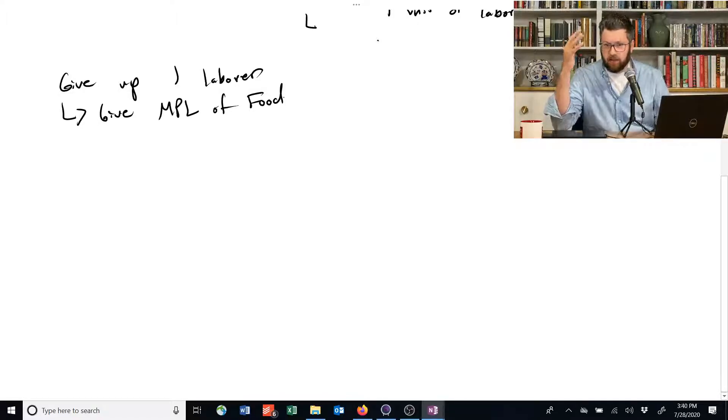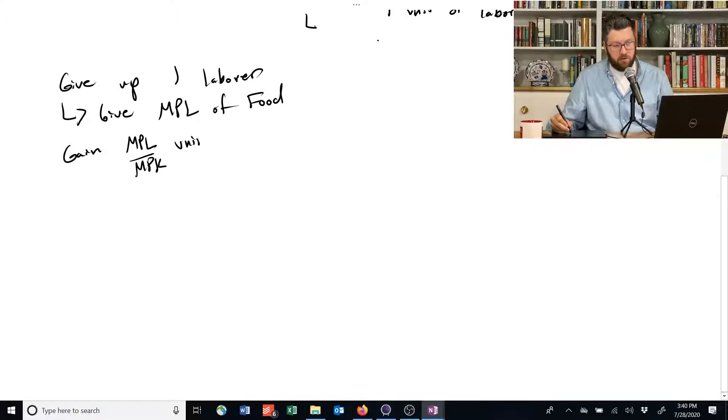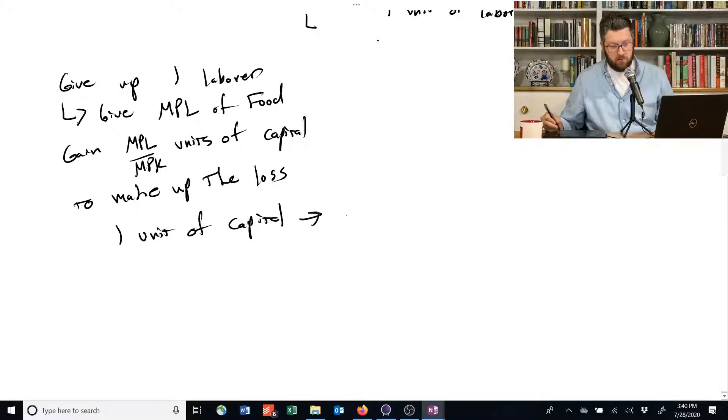If you give up one laborer, that means you give up one marginal product of labor of food. Now, we need to replace that. How do we replace it? We need to gain one marginal product of labor of food divided by MPK units of capital to make that up. Why is that the case? Well, if we gain one unit of capital, we obtain an extra marginal product of capital food.